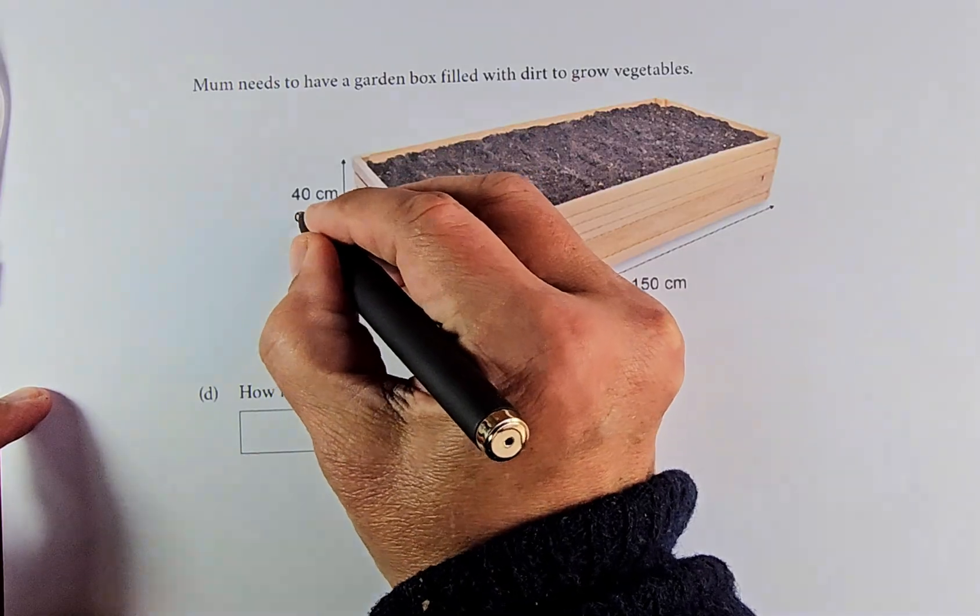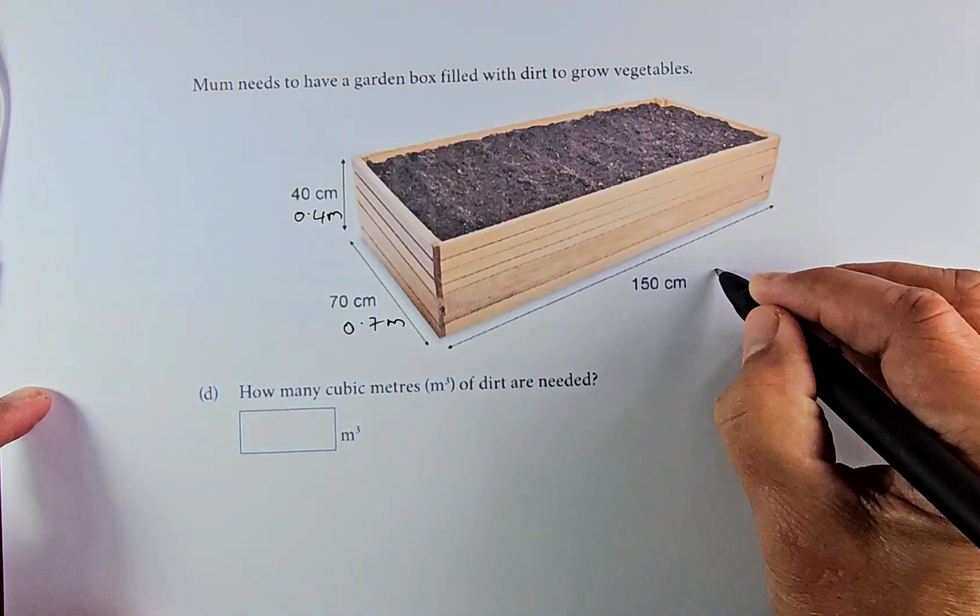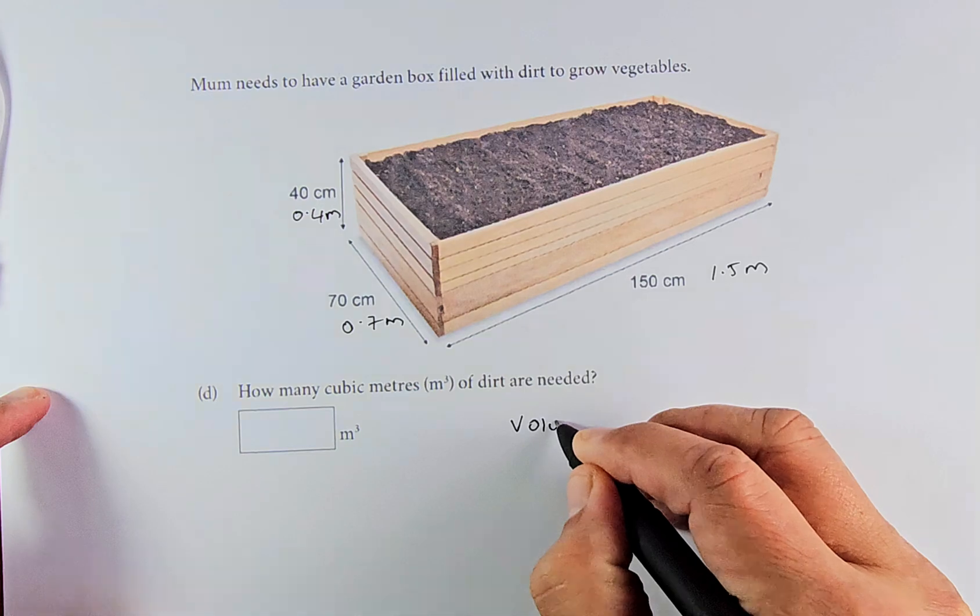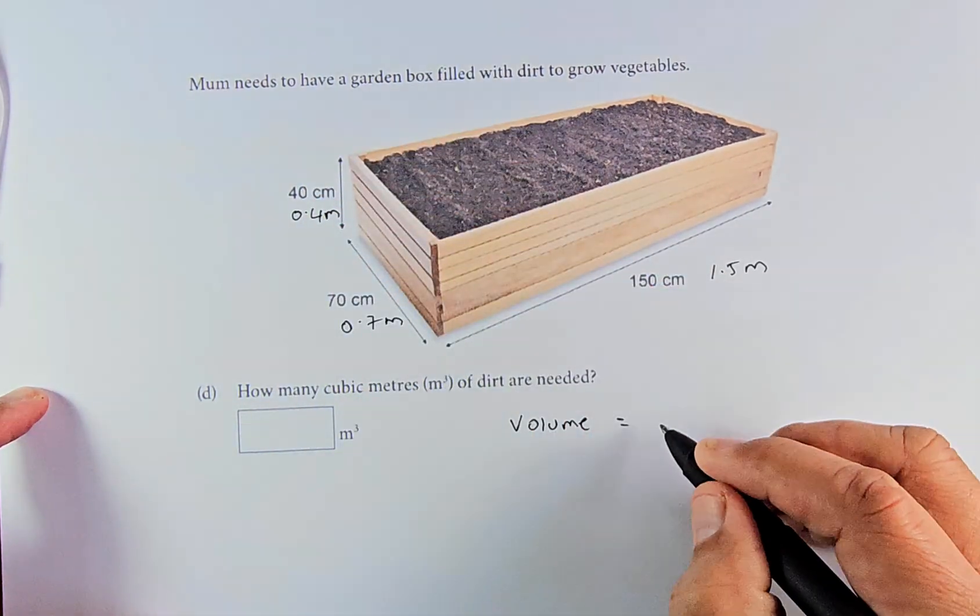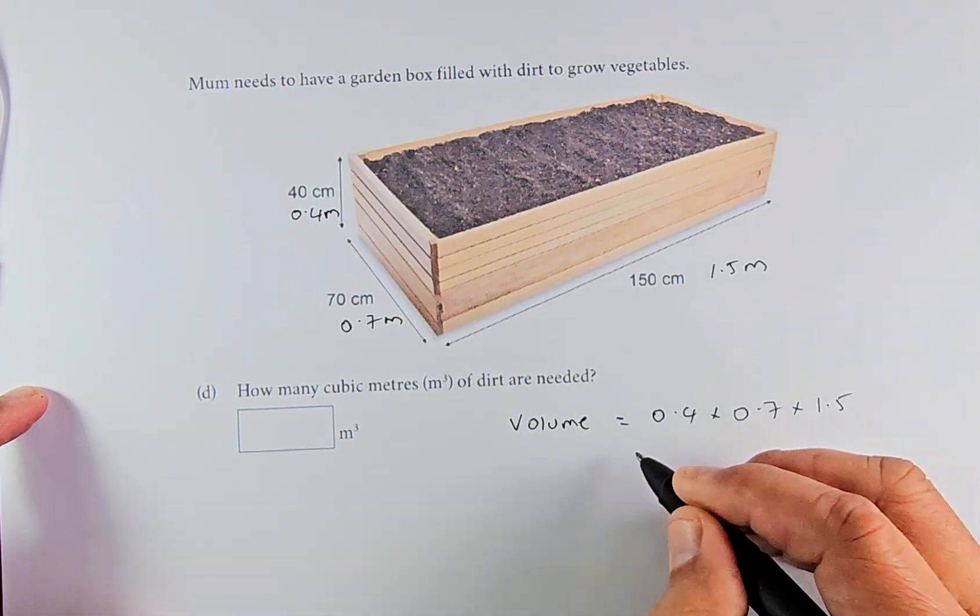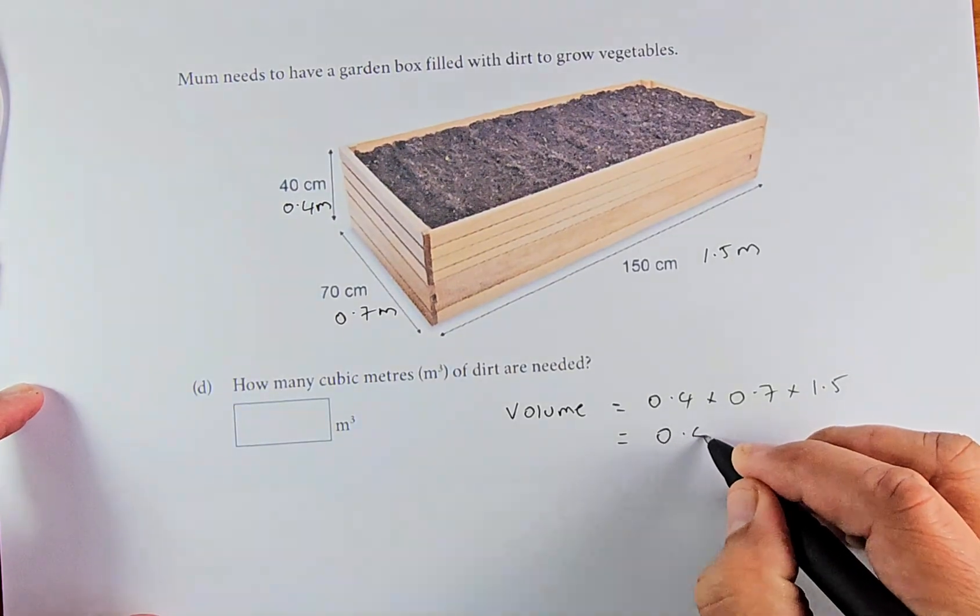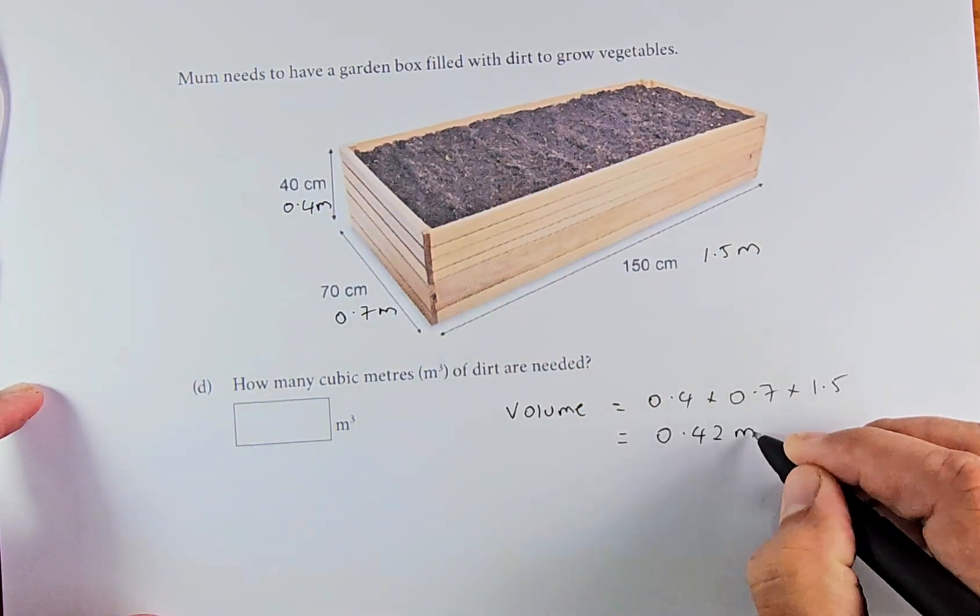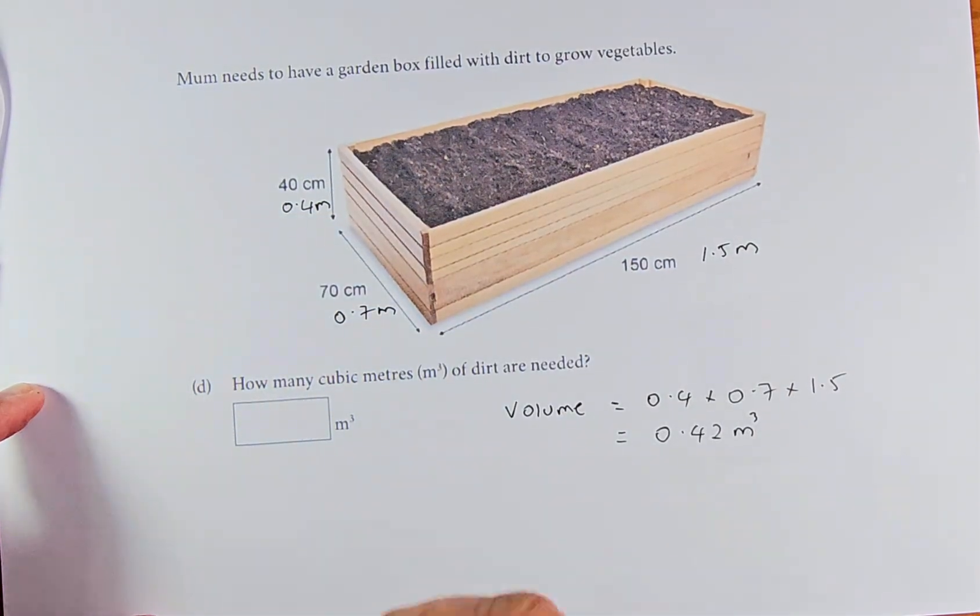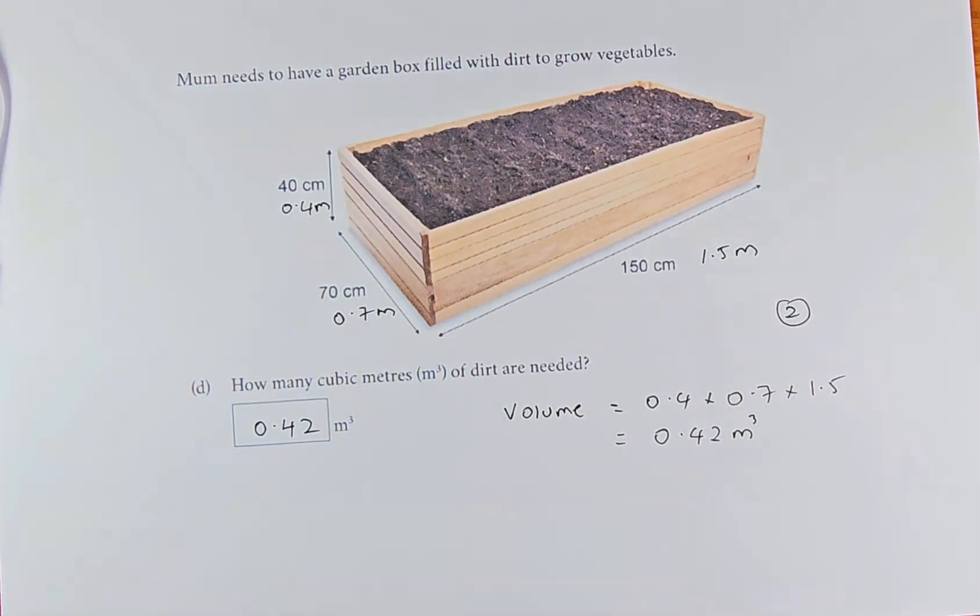So the volume of dirt - I will just multiply the three numbers: 0.4 × 0.7 × 1.5. Put it in your calculator. I've done it beforehand, it's going to be 0.42 meter cubed because the unit is meter cubed - length, width and height. So the answer is 0.42 meter cubed and that is outcome number two.